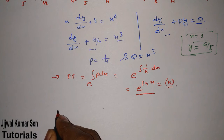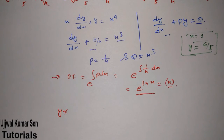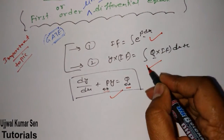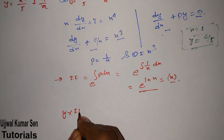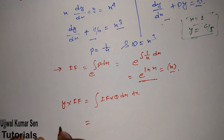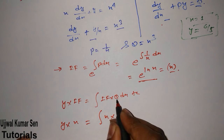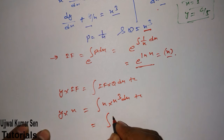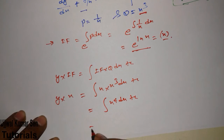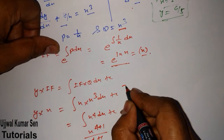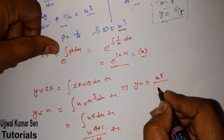Now we implement equation number 2 — the solution formula: y times integrating factor = integral of (integrating factor times Q) dx + C. So y times x = integral of x times x cubed dx + C = integral of x to the power 4 dx + C. After integration: yx = x to the power 5 by 5 plus C.